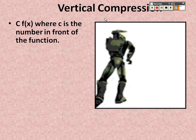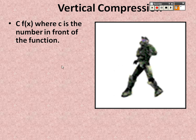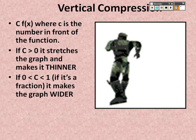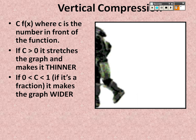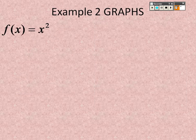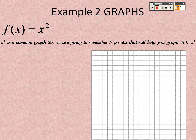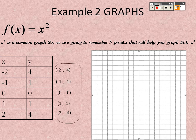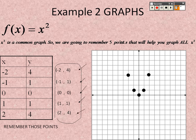Vertical stretch and compression: c is the number multiplied on the outside of the function. If c is greater than 1 it stretches the graph, making it thinner and closer together. If c is a fraction between 0 and 1, it gets wider. Remember the key points for x²: (0,0), (−1,1), (1,1), (2,4), and (−2,4).